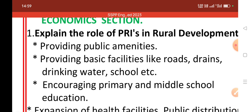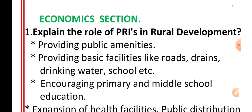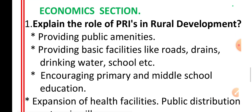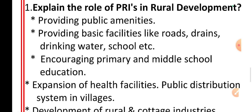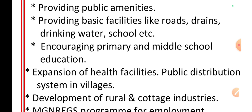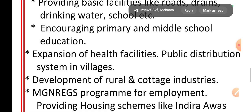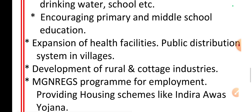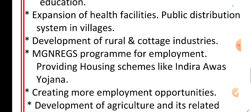Explain the role of PRIs in rural development. Providing public amenities — providing basic facilities like roads, drains, drinking water and schools. Encouraging primary and middle school education. Expansion of health facilities and public distribution system in villages. Development of rural and cottage industries.